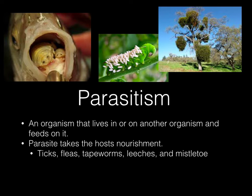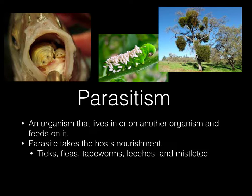Parasitism involves a parasite that needs a host and harms its host while it's thriving. Many parasites attach to a host and utilize its blood or eat nutrients before the host gets them, harming the host by taking those nutrients. Here we have a parasite within a fish that eats away at its tongue and takes nutrients from the fish. Here is mistletoe — we think of it as something you hang at Christmas, but it's actually a parasite taking nutrients from its tree.